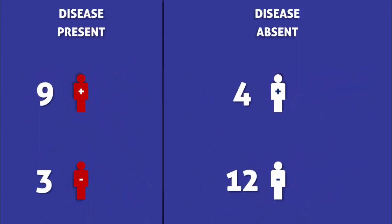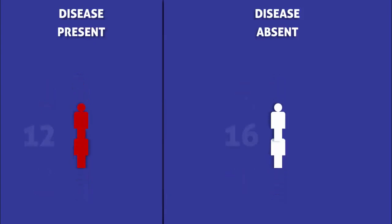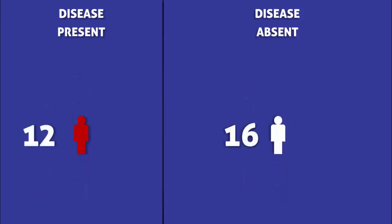9 people with the condition were exposed to a risk factor, whereas 3 with the condition were not. 4 people without the condition were exposed, while 12 people without the condition weren't. In total, 12 people had the condition and 16 people did not.